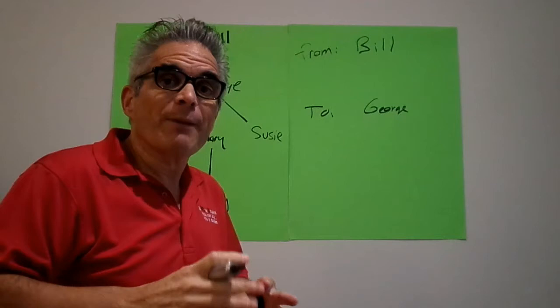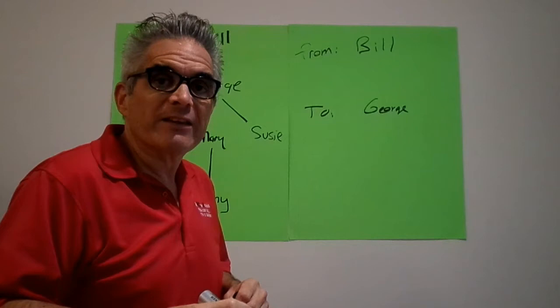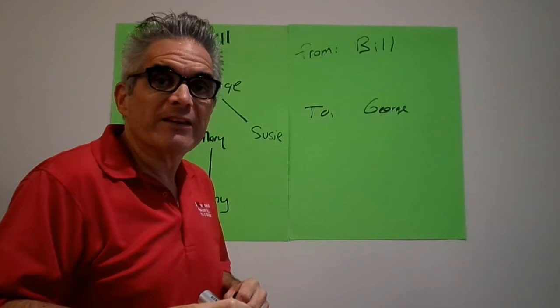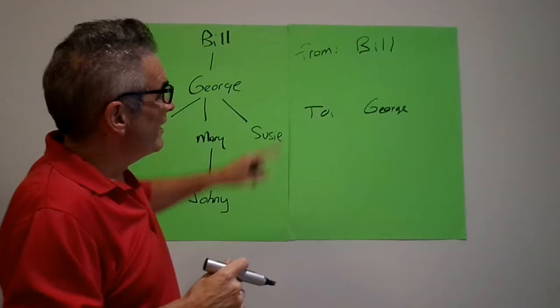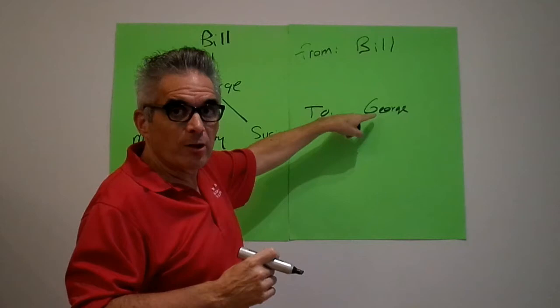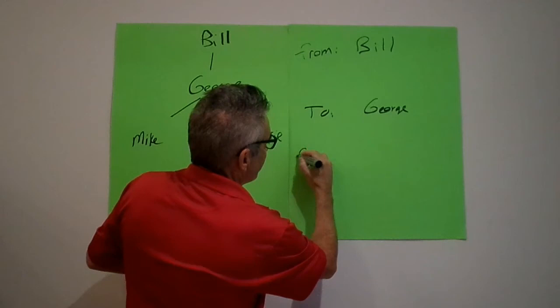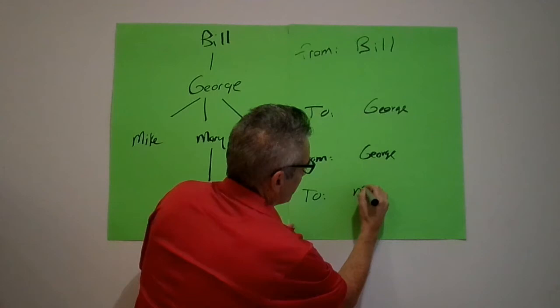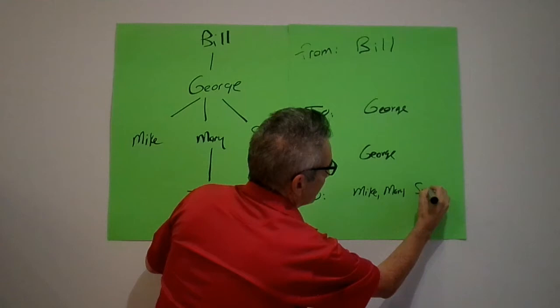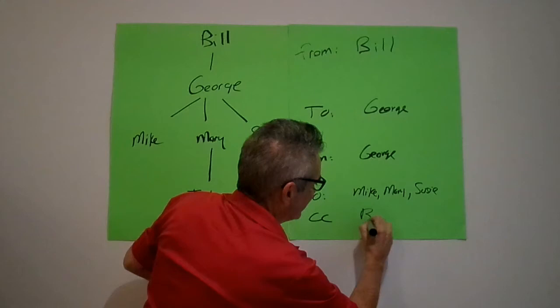But let's say he doesn't receive any response from George. Here's what you do, and this is all about training. Train your direct people and have them duplicate the process. When I send you an email, copy me when you send it to your team. So if Bill sent George an email, George would respond from George to Mike, Mary, and Susie, and copy Bill.